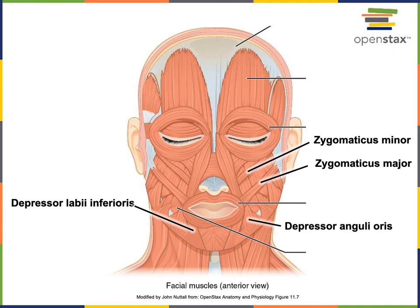Here we have the same illustration from the textbook with added labels to identify a few more muscles of facial expression. Starting with depressor labiae inferioris — this muscle tells you its action in the name: its action is to depress the lower lip. You can see it's located just inferior to the lower lip, with its origin attached to the body of the mandible and its insertion onto the lower lip.